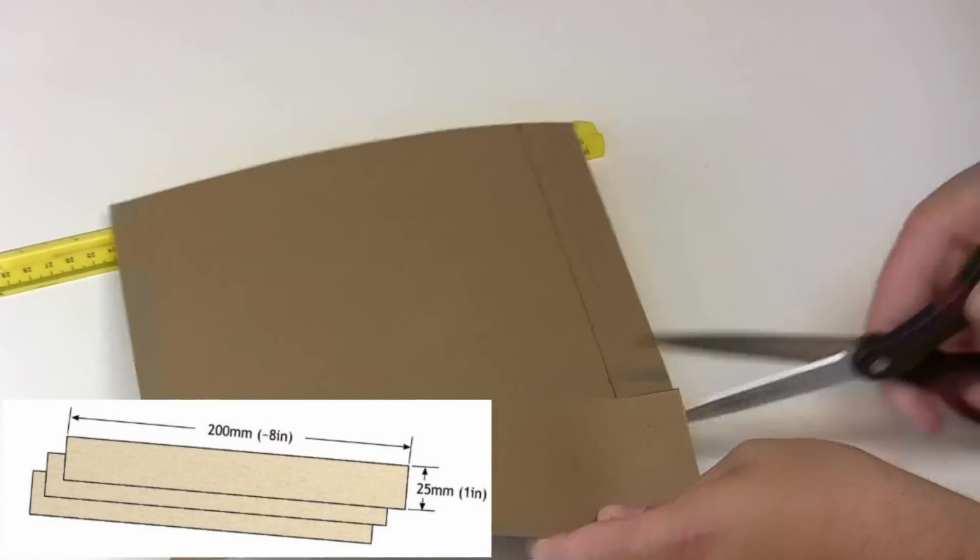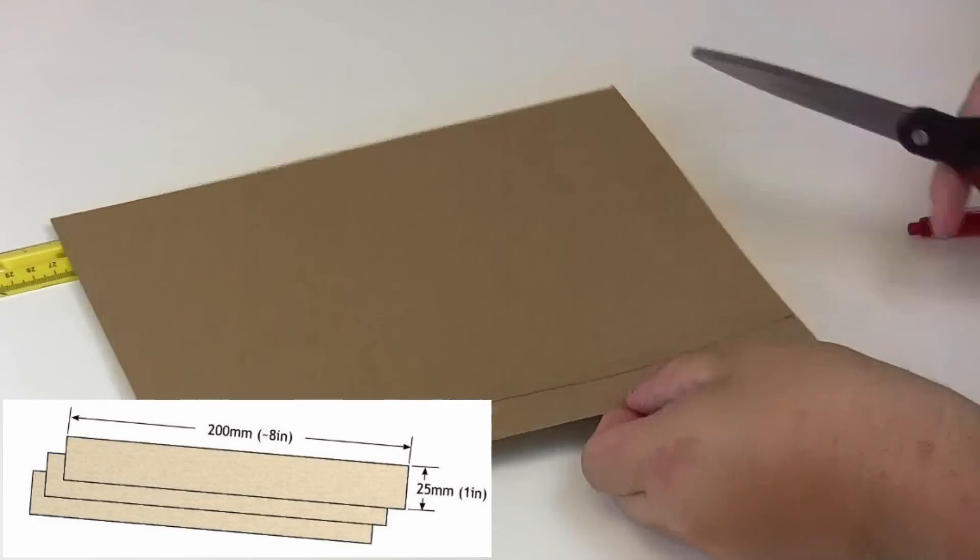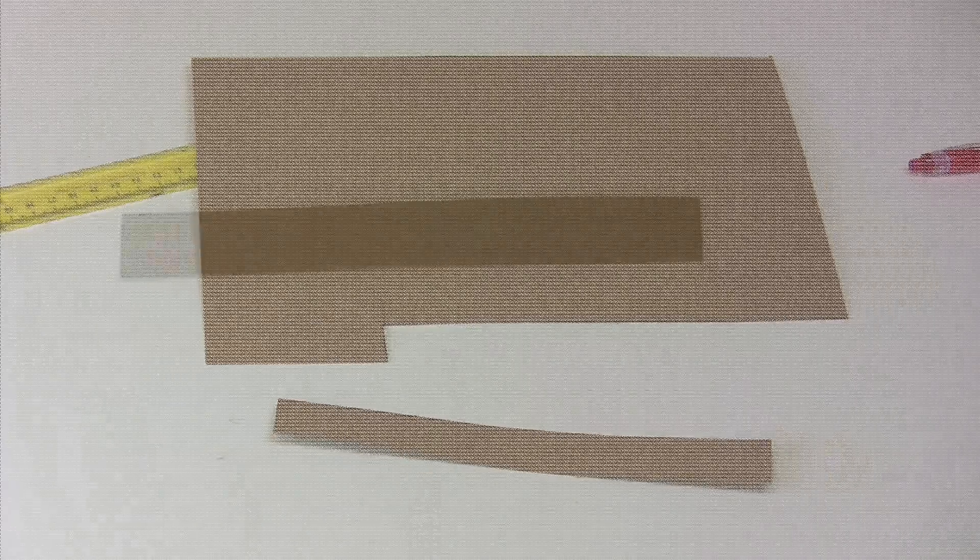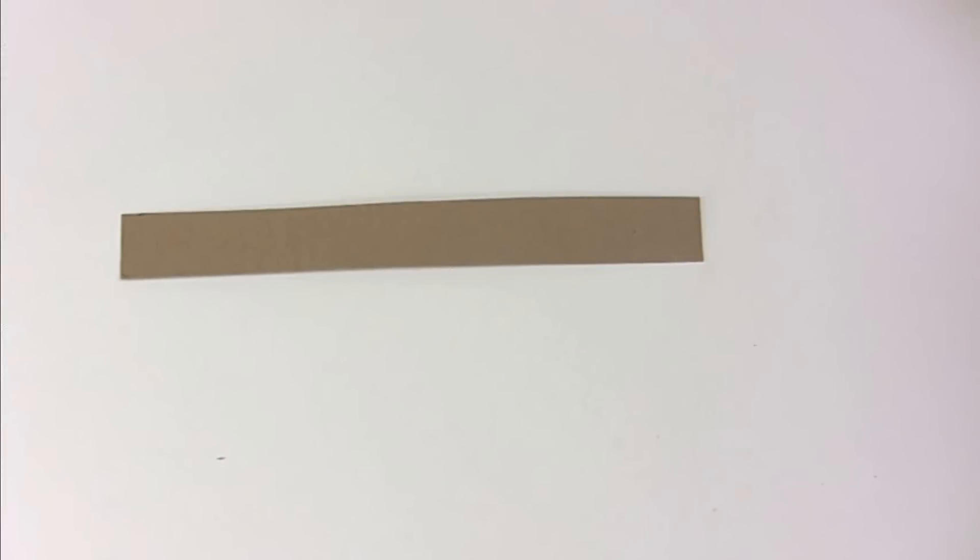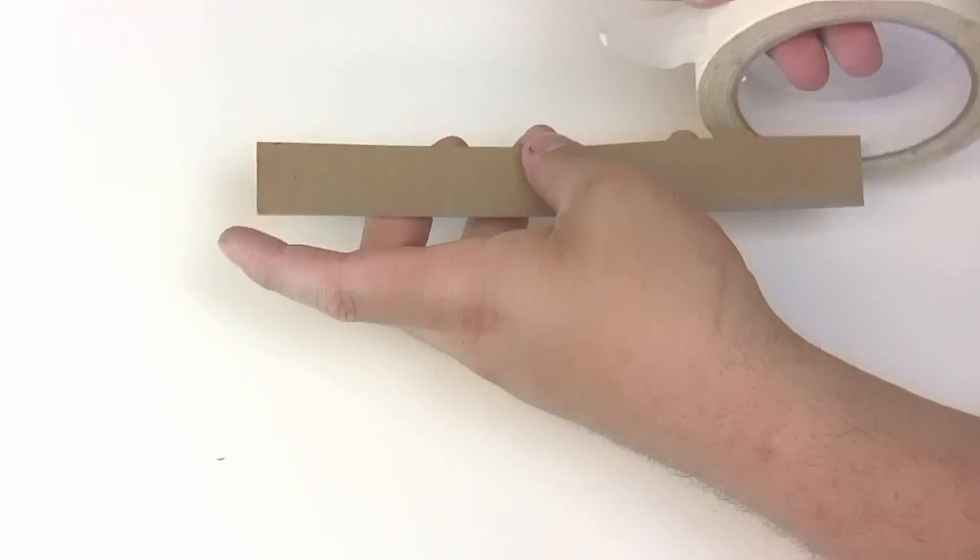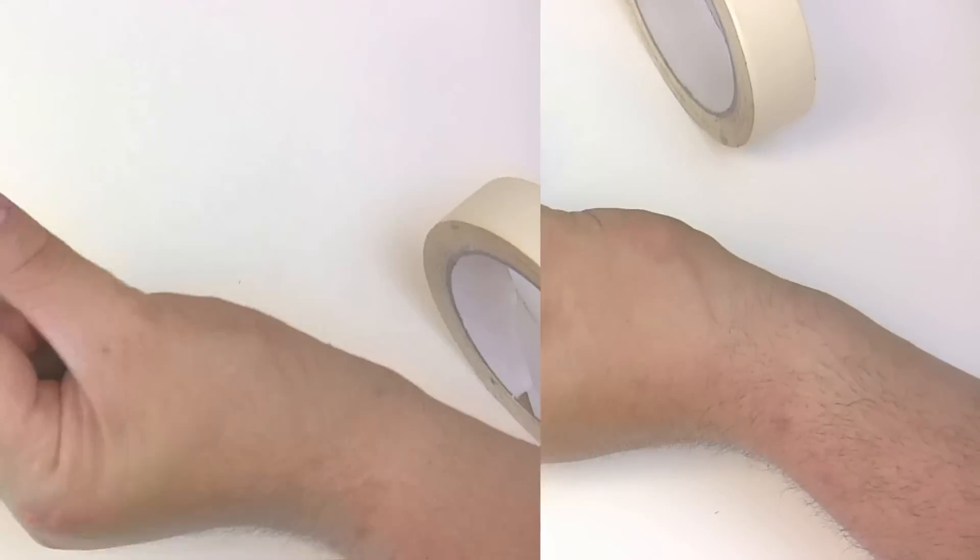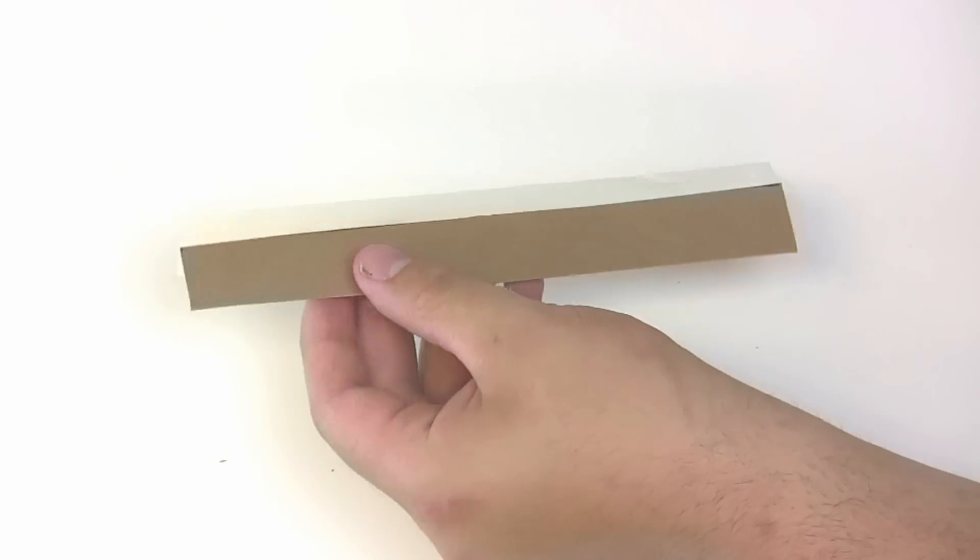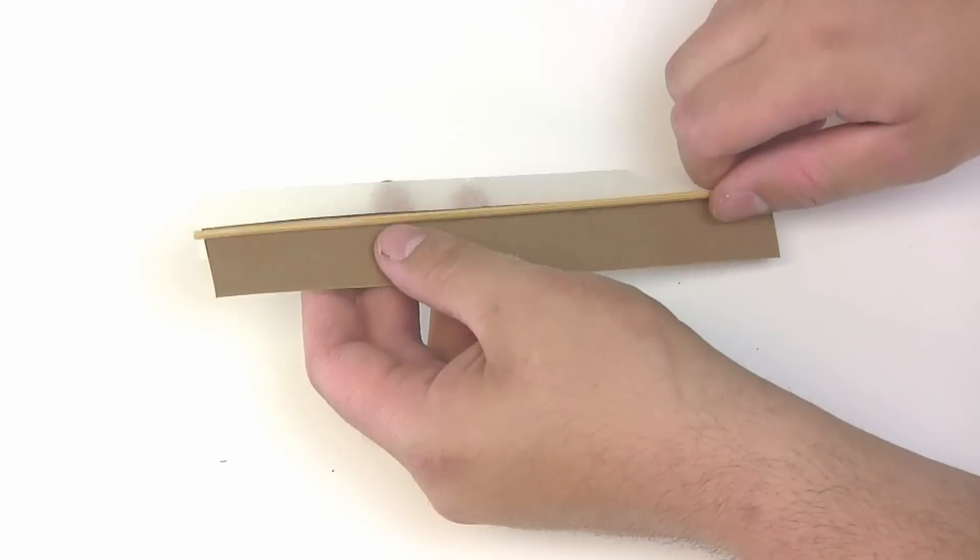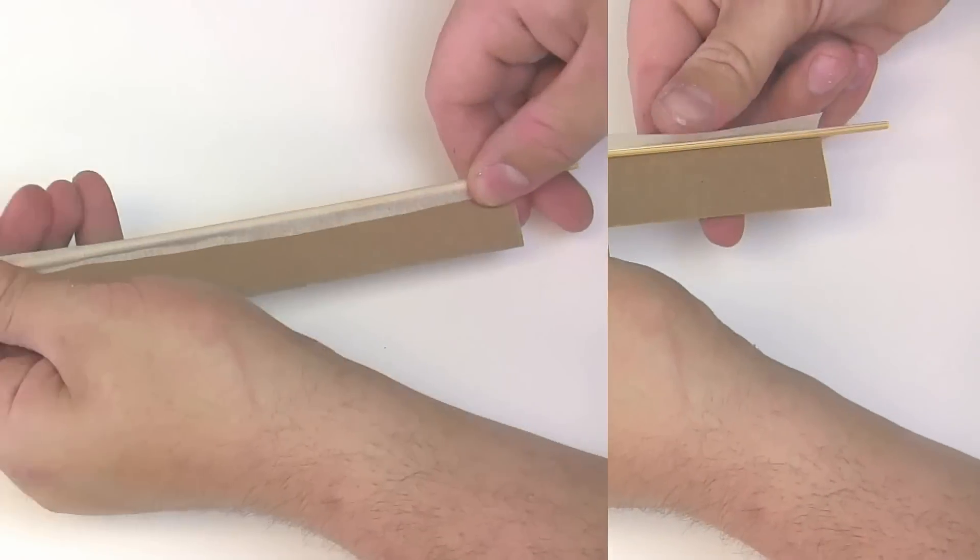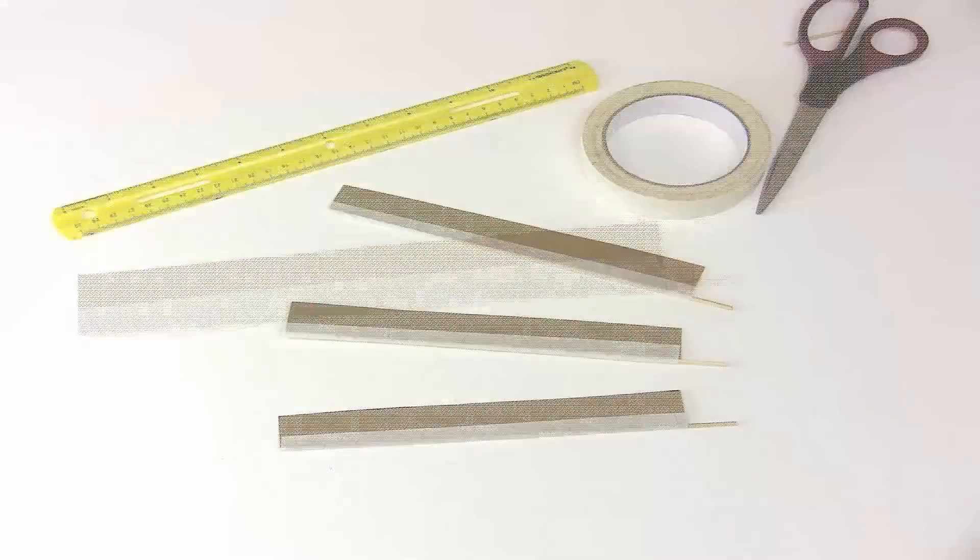Take the material you chose for your wind blades and cut out 3 rectangles that are 8 inches by 1 inch. Place a piece of tape halfway over the edge of the blade material. Take one of your cut skewers and place it on the edge of the blade so it also touches the tape. Then fold your tape over and press it down to adhere.